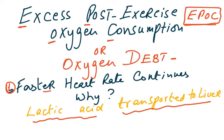In the new syllabus, this extra oxygen demand is called excess post-exercise oxygen consumption (EPOC), also known as oxygen debt. The faster heart rate continues after exercise because faster circulation carries lactic acid from the muscles to the liver more quickly — reducing delivery time from perhaps 20 seconds to 5 or 10 seconds.